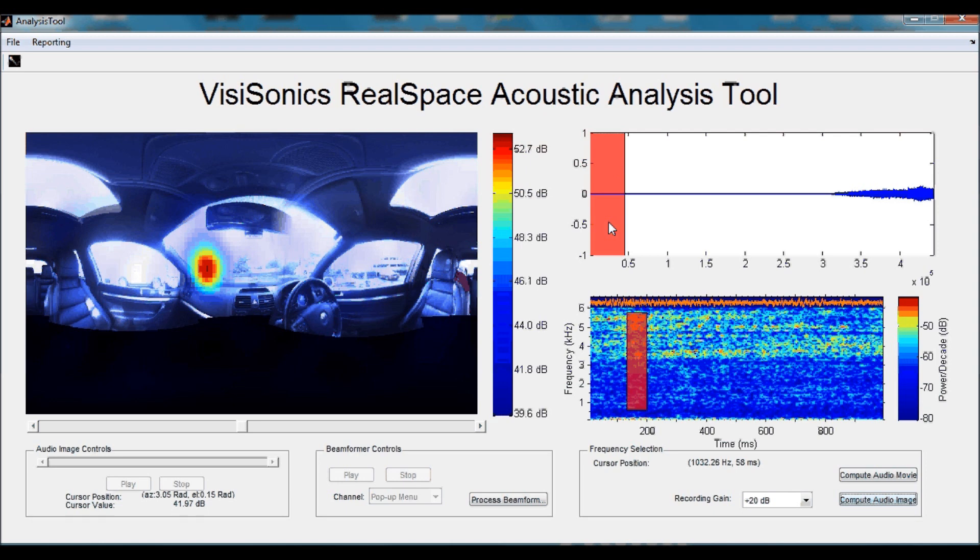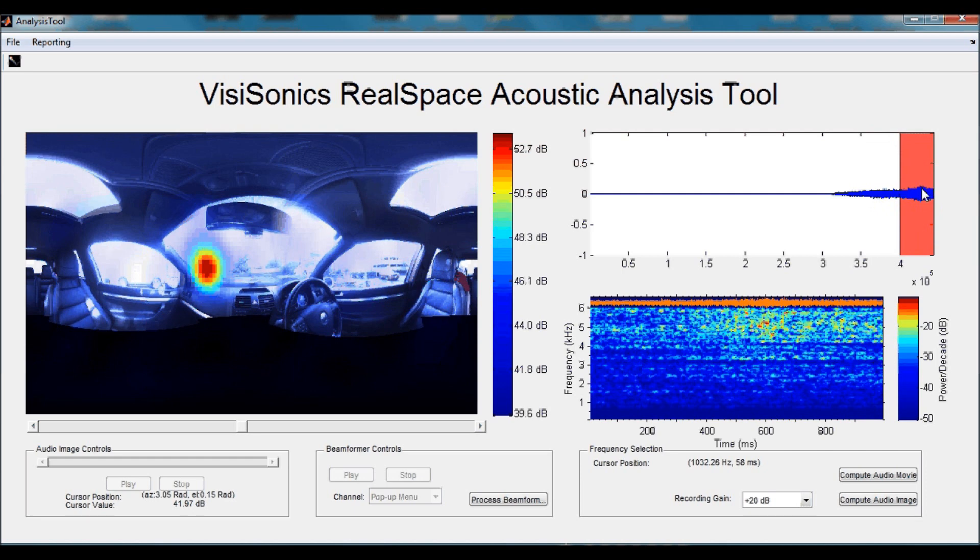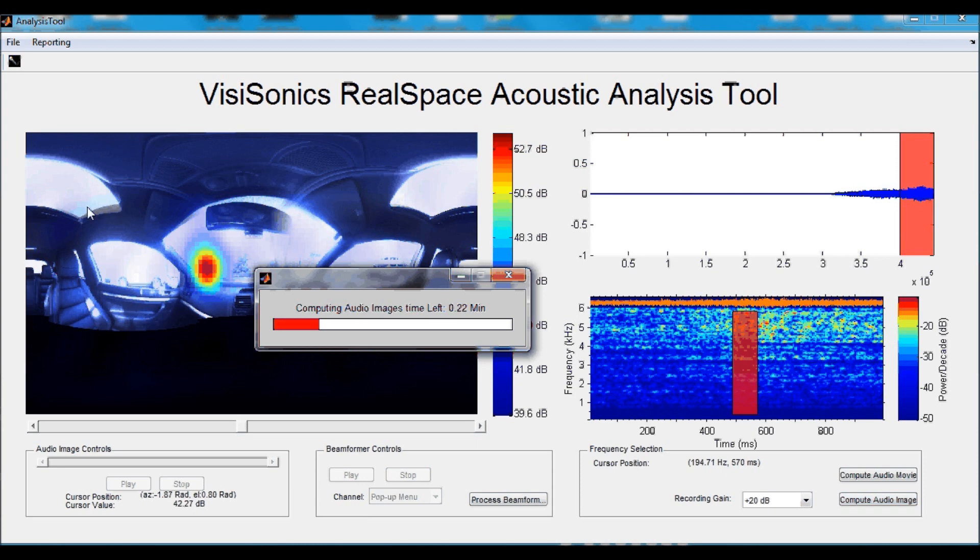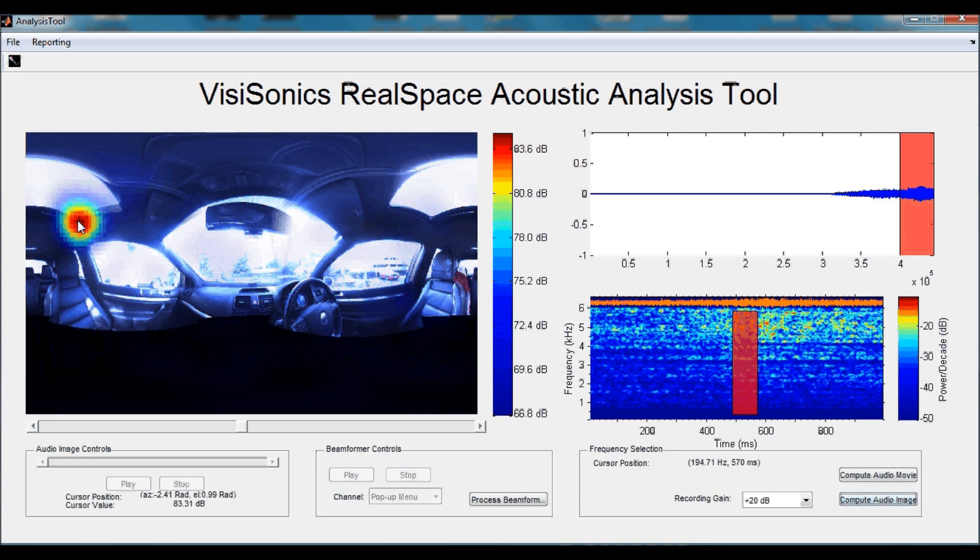Now let's move the time selection window to the point where the white noise source was over the sunroof. Now, because the sunroof was cracked, we would expect that the sound level transmittance is significantly higher, and in fact, we can see that 83.3 dB SPL is the level recorded at this point.